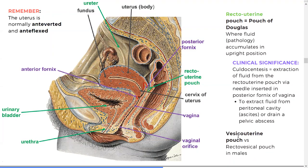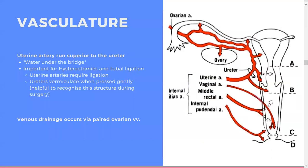The vasculature of the uterus is important — always remember 'water under the bridge': the uterine artery passes superiorly to the ureter. This is critical during tubal ligation or other operations, so you know you're identifying the right structure. You want to ligate the uterine artery carefully to make sure you're not touching the ureter.